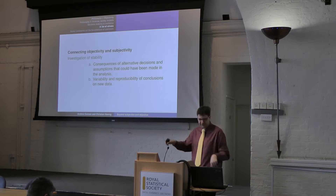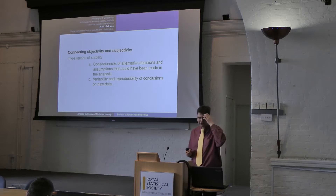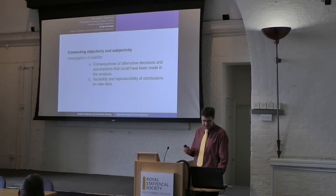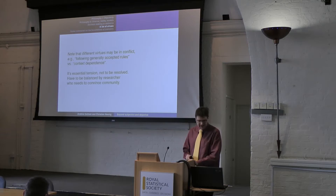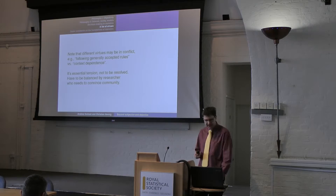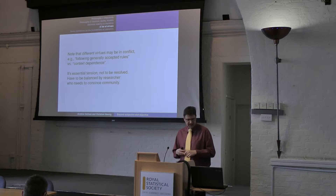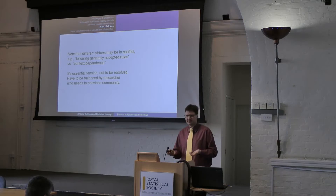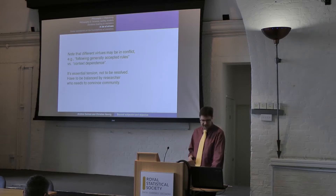Then we have two virtues connected to subjectivity. The first is awareness of multiple perspectives: recognition of the dependence on specific contexts and aims. The second, which we hardly ever find in any scientific paper, is honest acknowledgement of the researcher's position, goals, experiences and subjective point of view. And then we have one that connects objectivity and subjectivity — investigation of stability: consequences of alternative decisions and assumptions that could have been made in the analysis, and investigation of variability and reproducibility of conclusions on new data. The different virtues may at times be in conflict — for example, following generally accepted rules may conflict with context dependence. This is the essential tension in science, and the researcher needs to balance these and convince the community that it makes sense.